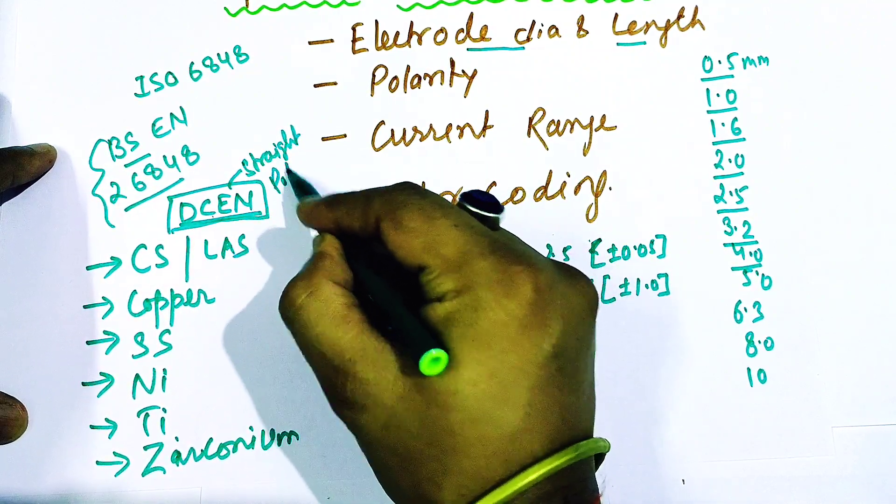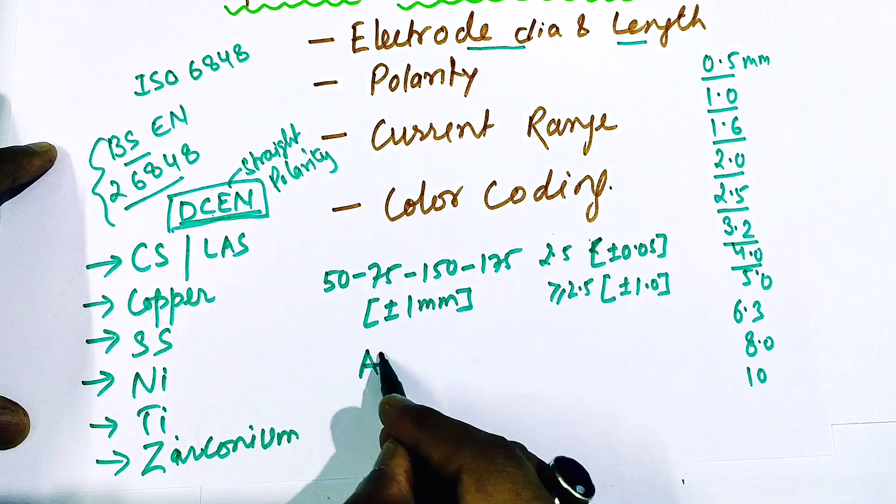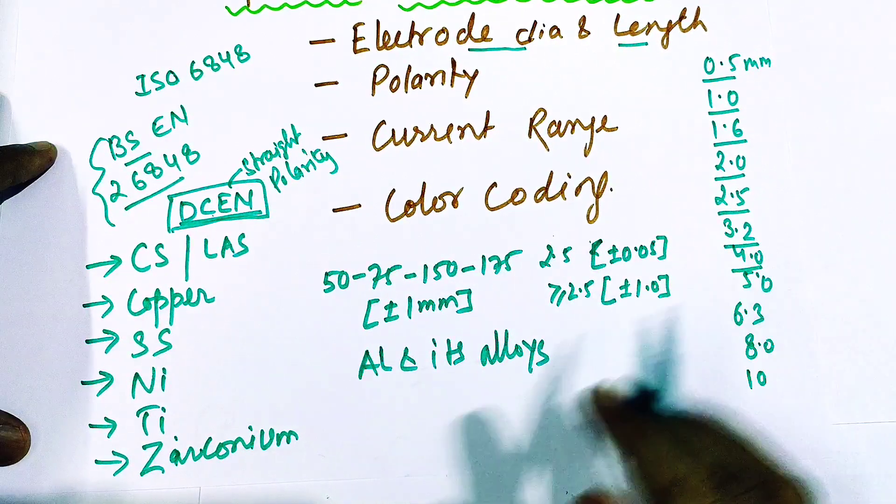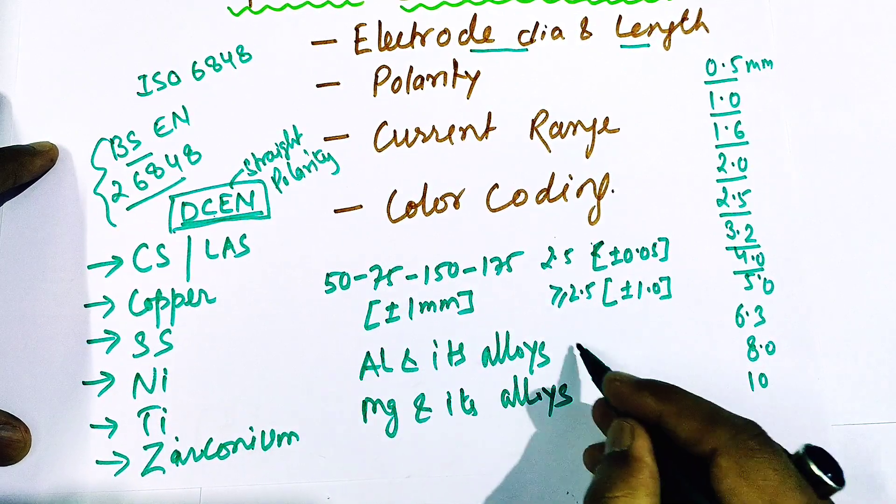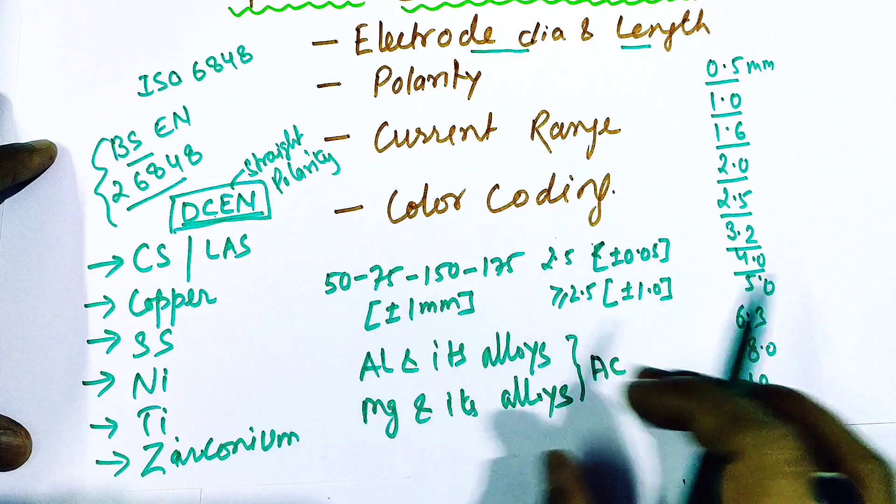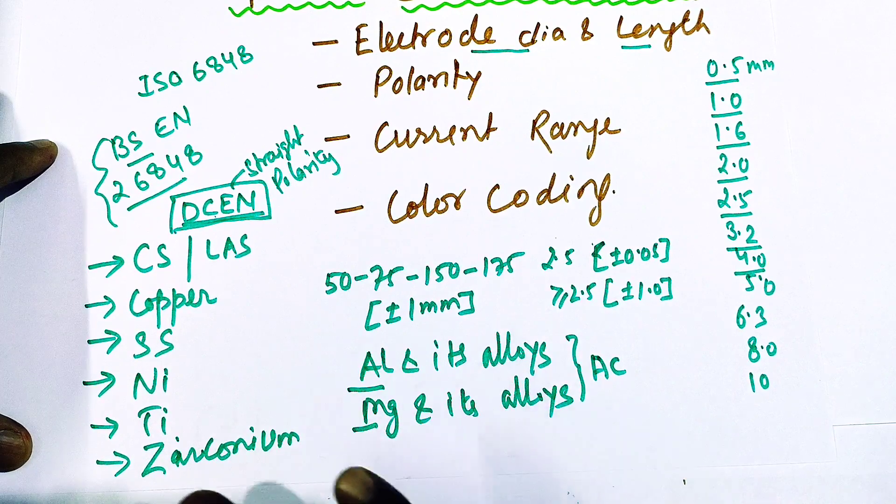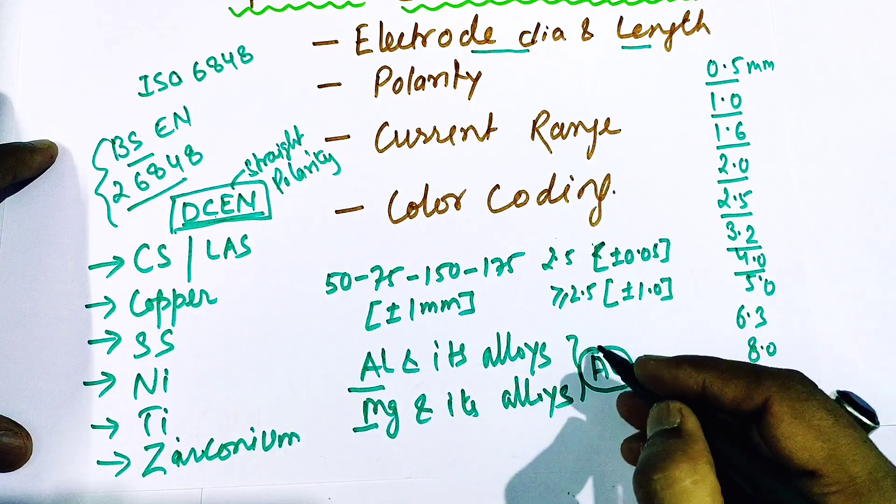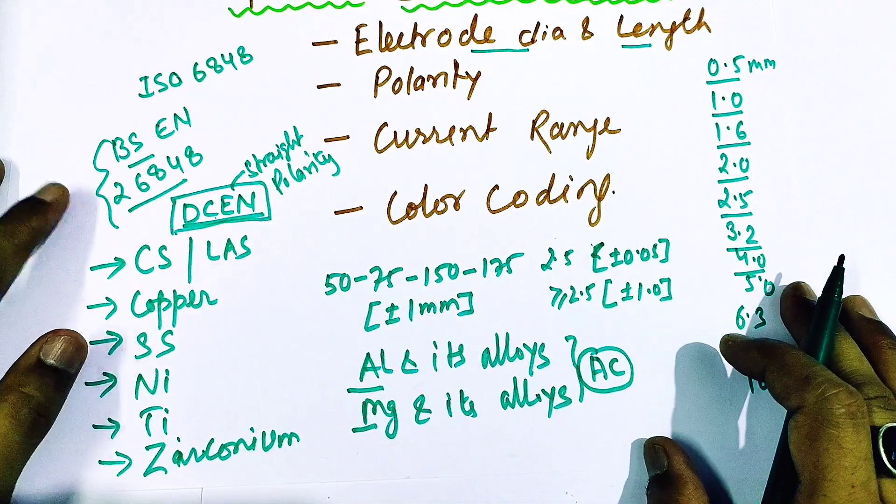Whereas aluminum and its alloys and magnesium and its alloys are used in AC, alternating current. Here DCEN and here alternating current, because aluminum has a layer of aluminum oxide, so aluminum oxide layer is there. So during AC, a cleaning action is taken or cleaning action is done. Hence, for aluminum and magnesium, AC is recommended.